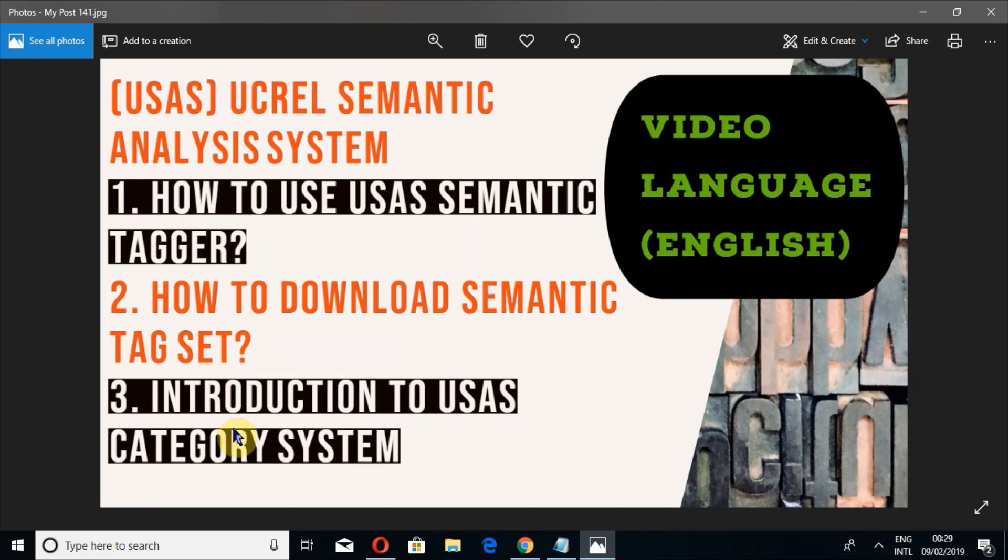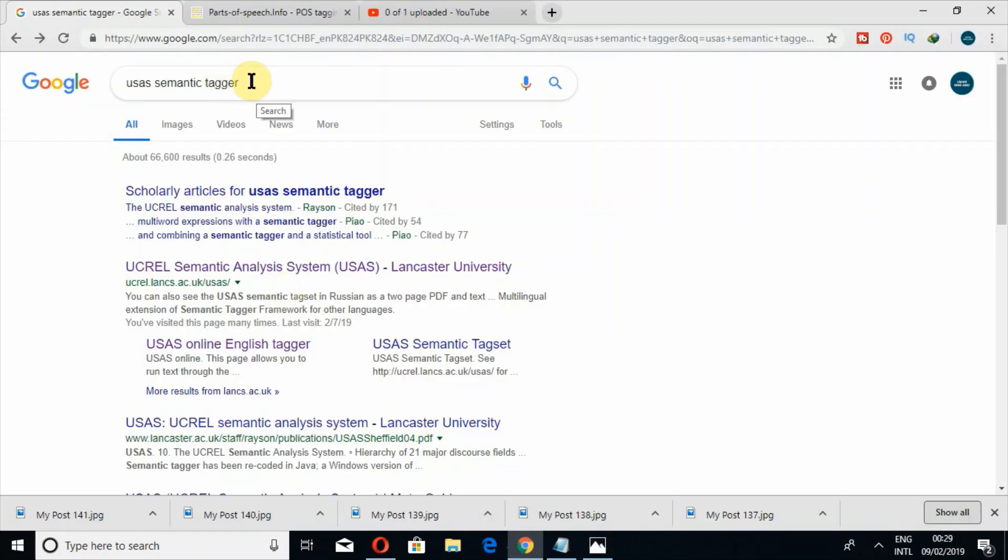I'll show you how to download its semantic tag set and a brief introduction to the category system of USAS. Let's open it. You just have to write USAS semantic tagger in the internet, and here is this link: UCREL Semantic Analysis System.